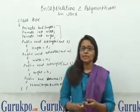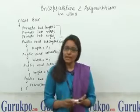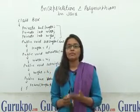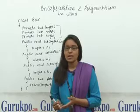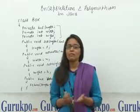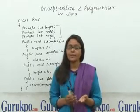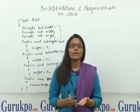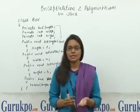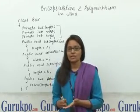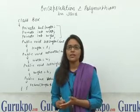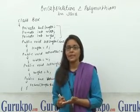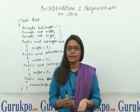Coming to Polymorphism. Poly means many and morphism means forms, meaning one thing can have different forms. Polymorphism means one thing performs different actions depending on the situation. For example, a person performs different actions depending on the situation — sometimes laughing, sometimes crying, and sometimes angry.